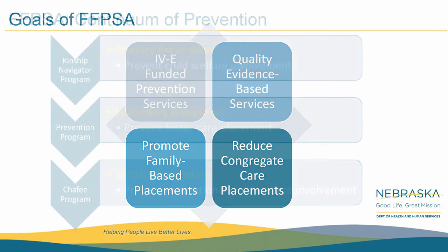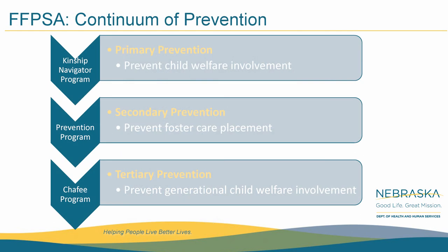As you can see, there are three different levels within the continuum of prevention within FFPSA. The first is primary prevention. What Nebraska will do to address primary prevention is to utilize a kinship navigator system. This is to assist kinship caregivers in learning about, finding, and using programs and services to meet the needs of the children they are raising and their own needs — prior to the family coming to the attention of CFS.